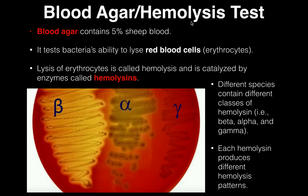Let's break down this word hemolysis. The last part, lysis, means the breakdown of some kind of cell — the cell is bursting or lysing, as we would call it. And hemo is the prefix that means blood, so hemolysis is the breakdown of red blood cells specifically.